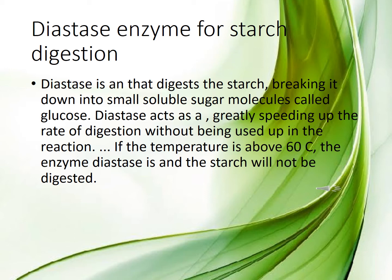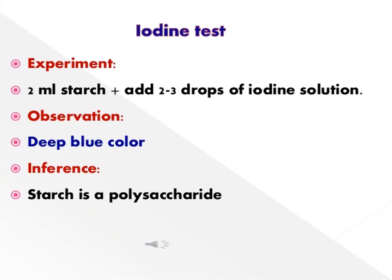If the temperature is above 60 degrees centigrade, the enzyme diastase will not digest the starch. So it is also very specific for temperature. After digesting the starch into very small monomers by using the diastase enzyme, we are going to perform the iodine test.